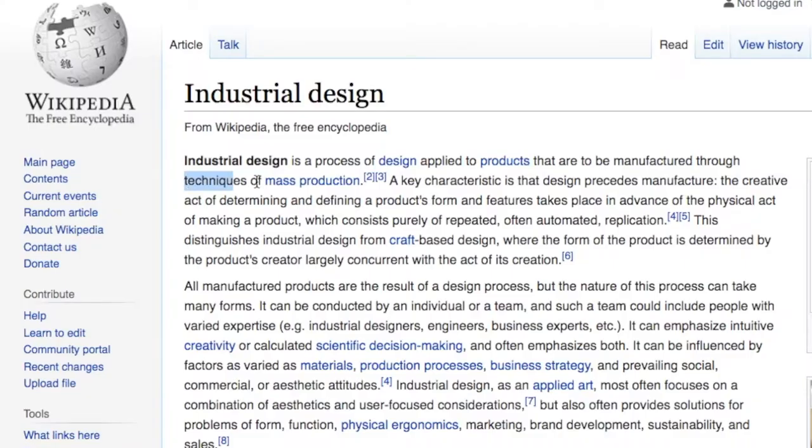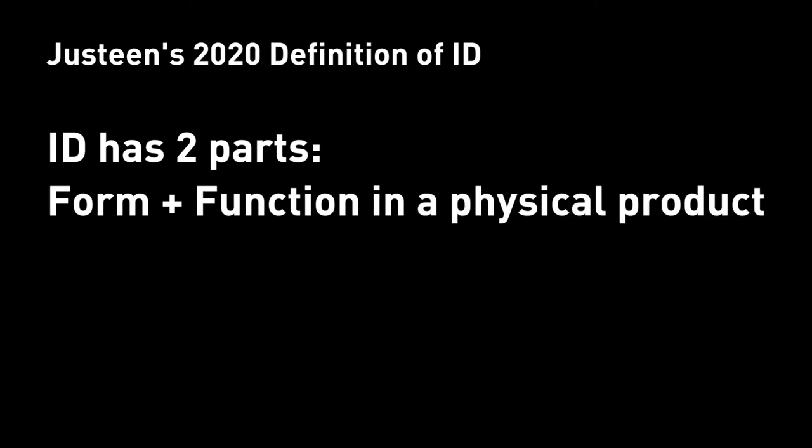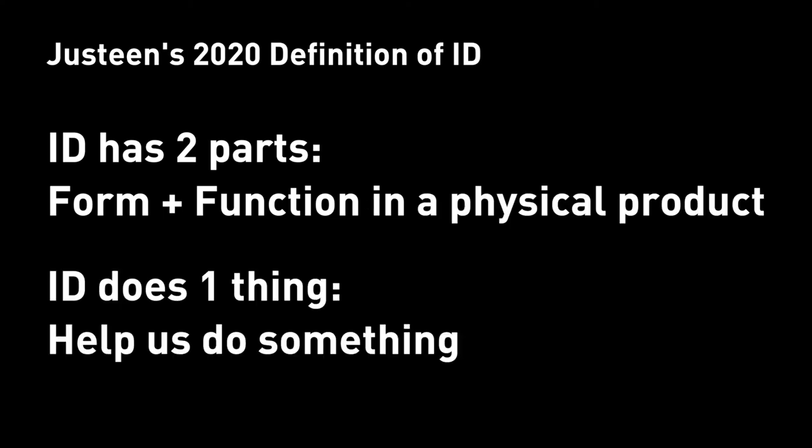Wikipedia does point out something worth highlighting — mass production and form — but that definition is not the easiest thing to understand. So let me give you my loose version of what industrial design is. Industrial design has two parts: form and function in a physical product, and thus one thing — to help us do something in our lives.